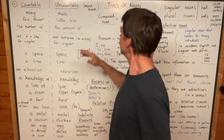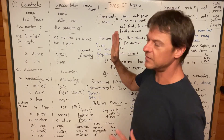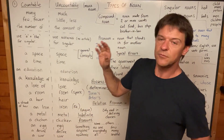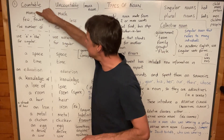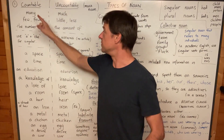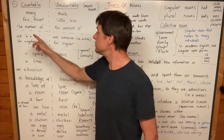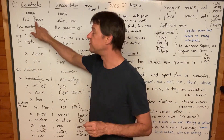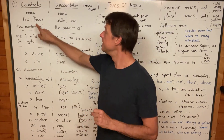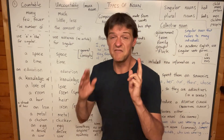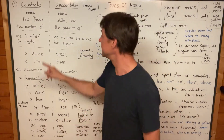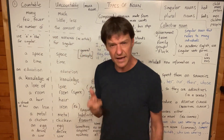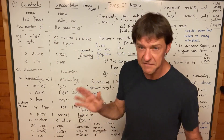With countable nouns, you need to use 'many,' or if you're talking about not many, you need to use 'few.' And if you want to use a comparative form, it's 'fewer.' I'm going to be honest with you here: very few native speakers use 'fewer' — especially 'fewer' — correctly.